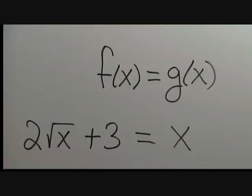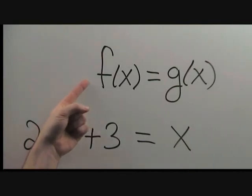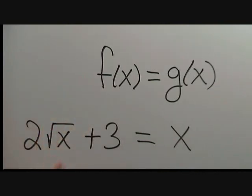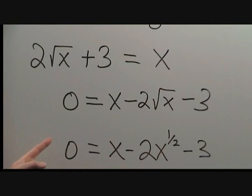To find the x-coordinates of the intersection point, we need to solve for x in the equation f(x) = g(x). That means we need to solve 2√(x+3) = x. The first step is to bring everything to one side of the equation. Then I like to replace the square root by the exponent 1/2. I find it's easier to work with.